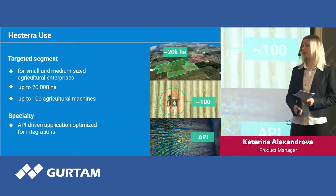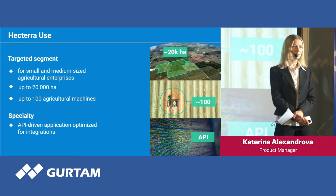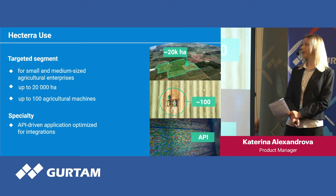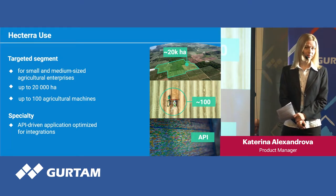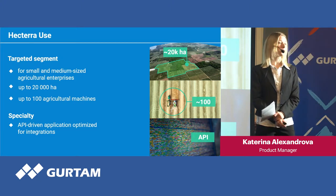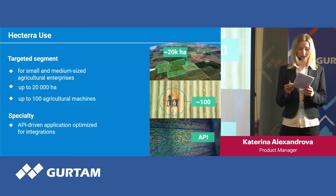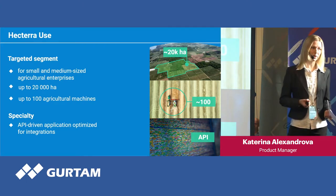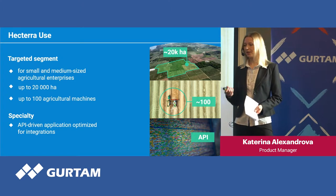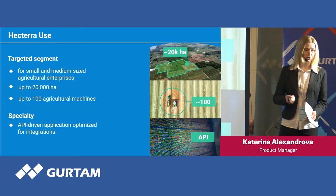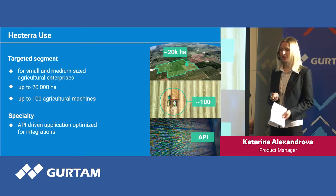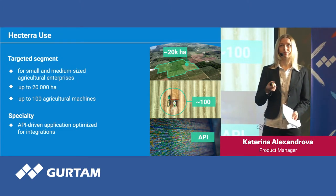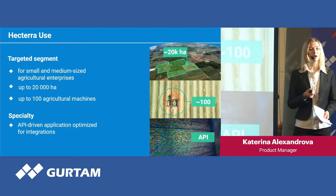Hectera can be used in agricultural companies of small and medium size — farms with lands up to 20,000 hectares, or up to 100 agricultural machines. Using Hectera suggests integrational processes. This could be integration with any custom software used by the end client, or data exchange with third-party applications such as your own application. That's why Hectera is highly optimized to use its functionality via API.